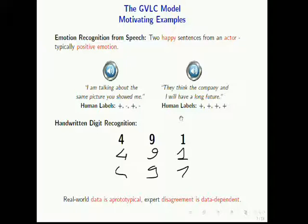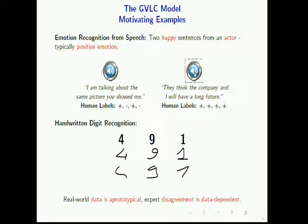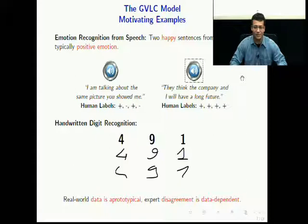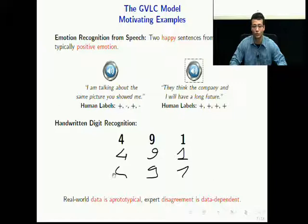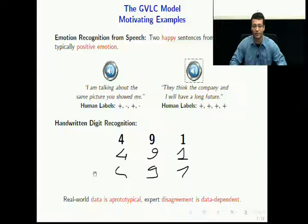Let me give a few motivating examples first for the GVLC model. Consider the case of emotion recognition from speech. I will play out two happy sentences from an actor, and happiness typically corresponds to positive emotion. Both of these sentences are happy, but we see that there are different levels of disagreement between the labels assigned by four human annotators on the left and the right. The second case is human handwritten digit recognition, where the second row shows some prototypical handwritten digits, whereas the last row shows some atypical digits. What we conclude is that real-world data is atypical, and expert disagreement is data-dependent.